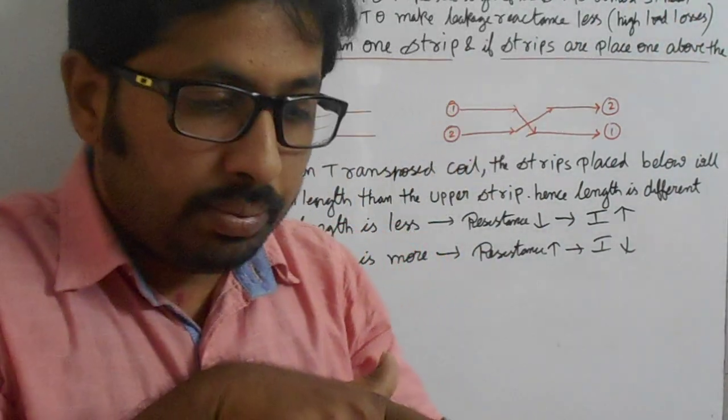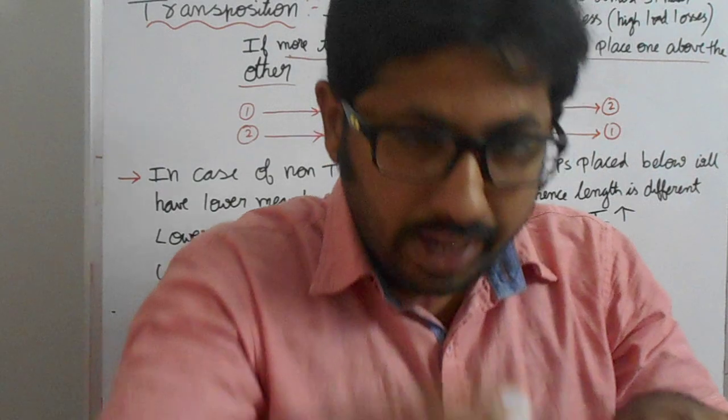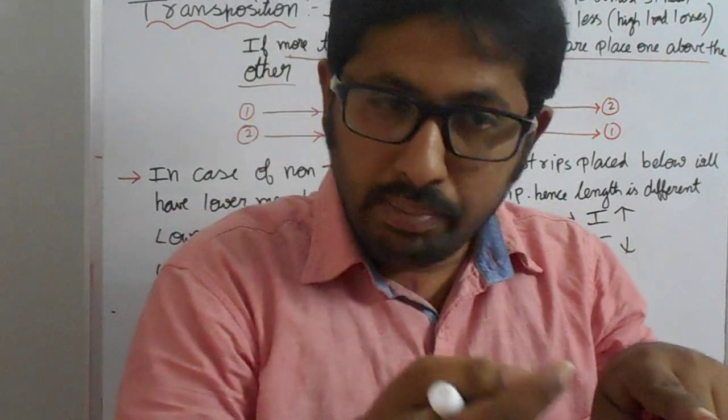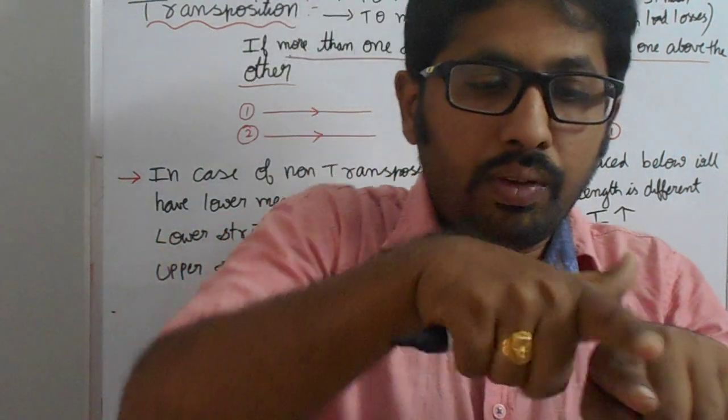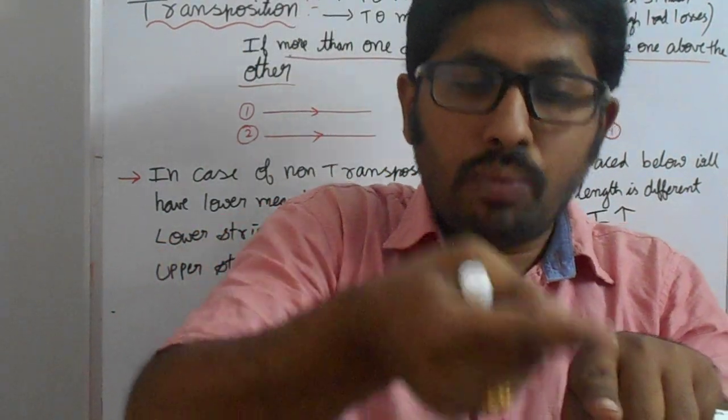If I take multiple strips one above the other and if I wind, if you see the mean length, mean length of the bottom one will be less and the mean length of the top one will be more.